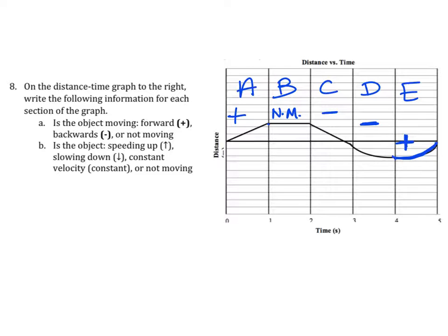Next up, for part B, it asks us if it's speeding up, slowing down, constant velocity, or not moving. Let's go through each section. For A, it's a diagonal line. A diagonal line on a position graph means constant velocity.